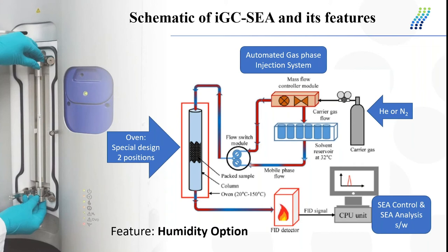Our IGC-SEA system is equipped with FID, which is the most sensitive detector for organic vapors, but it's not sensitive for water. Therefore, we provide the system with a background humidity controller, which can generate humid carrier gas flow through the column. The influence of relative humidity on different physicochemical properties can be measured with IGC-SEA. This is quite an important benefit because there's humidity everywhere — during production, during storage, and during the application of the solid material.